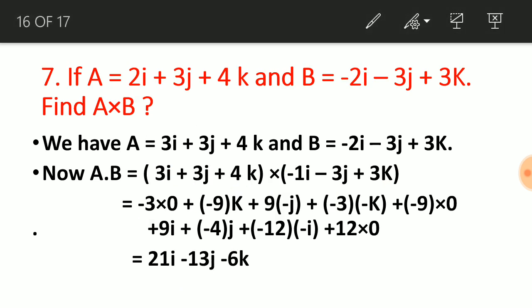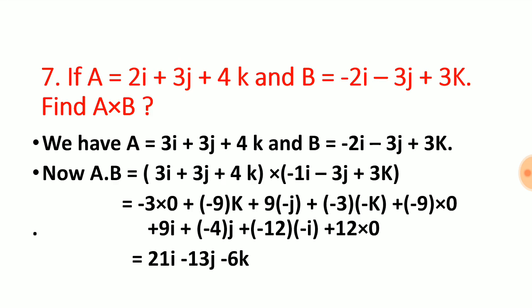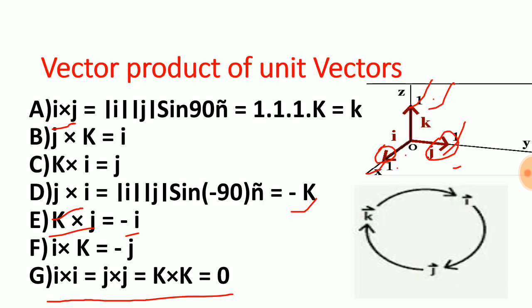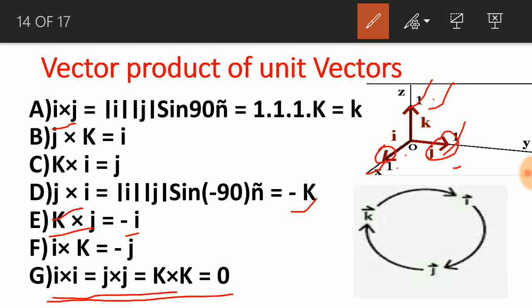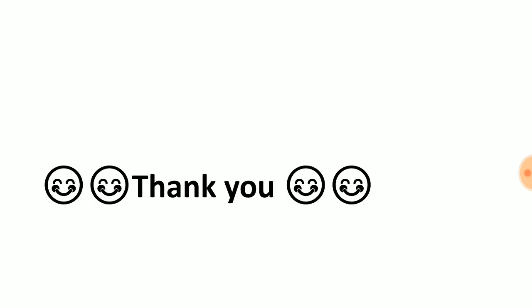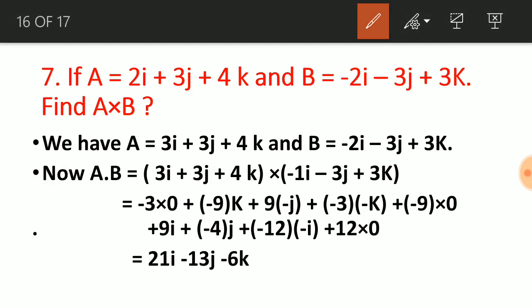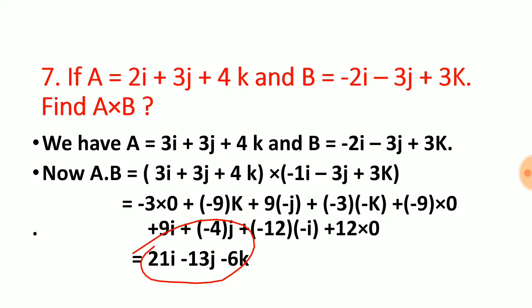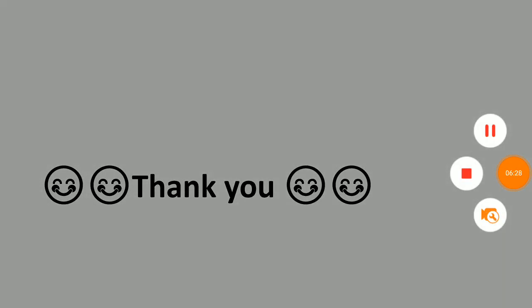For the cross product, we use the same table: i×i = j×j = k×k = 0, i×j = k, j×i = −k, and so on. Applying these rules allows us to calculate the value of the cross product. Thank you very much and all the best for your examinations.